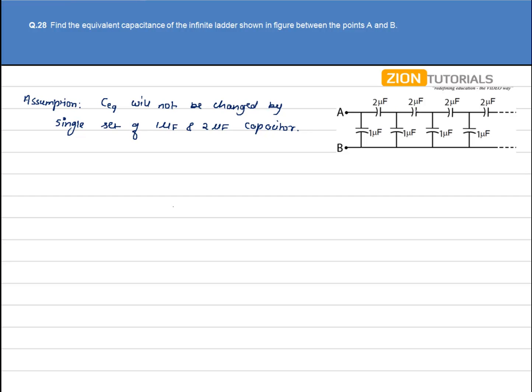So what is going to happen here is if I assume this much circuit, then the net equivalent of this much circuit is also C equivalent. Because as our assumption is that C equivalent will not be varied if we remove 1 microfarad and 2 microfarad capacitors.